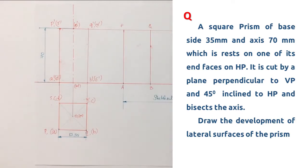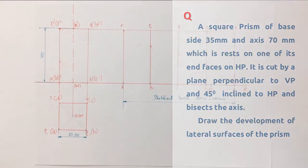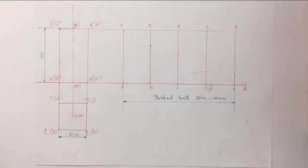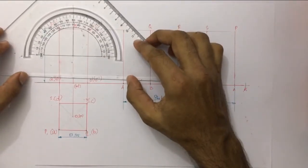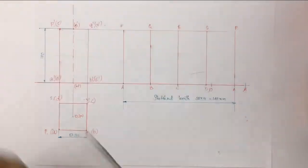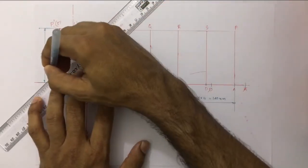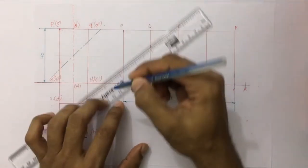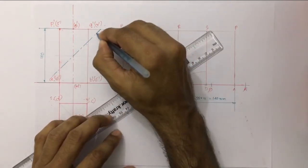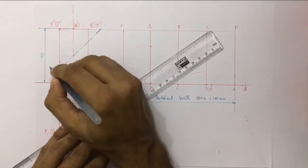For the section plane, it is perpendicular to VP and 45 degrees inclined to HP. The midpoint of the axis is at 35 mm height. The section plane is denoted by a chain thin line with thick ends and arrowheads — that means a chain thin line with thick ends and arrowheads.